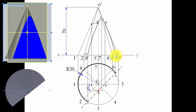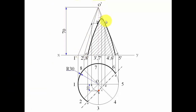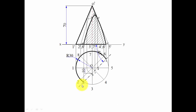When you join all these points — A, B, C, D, E — with the help of a smooth curve, this is what you call the sectional front view. Add hatching to the section, and darken the visible outline. That completes the sectional front view. This is also the sectional top view. Now we go ahead and make the true shape of this section.